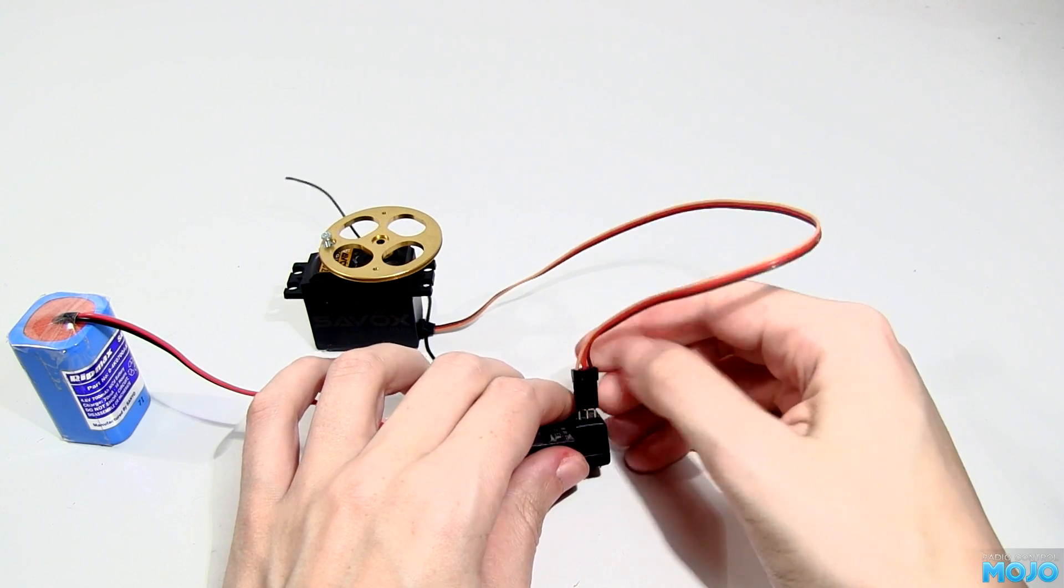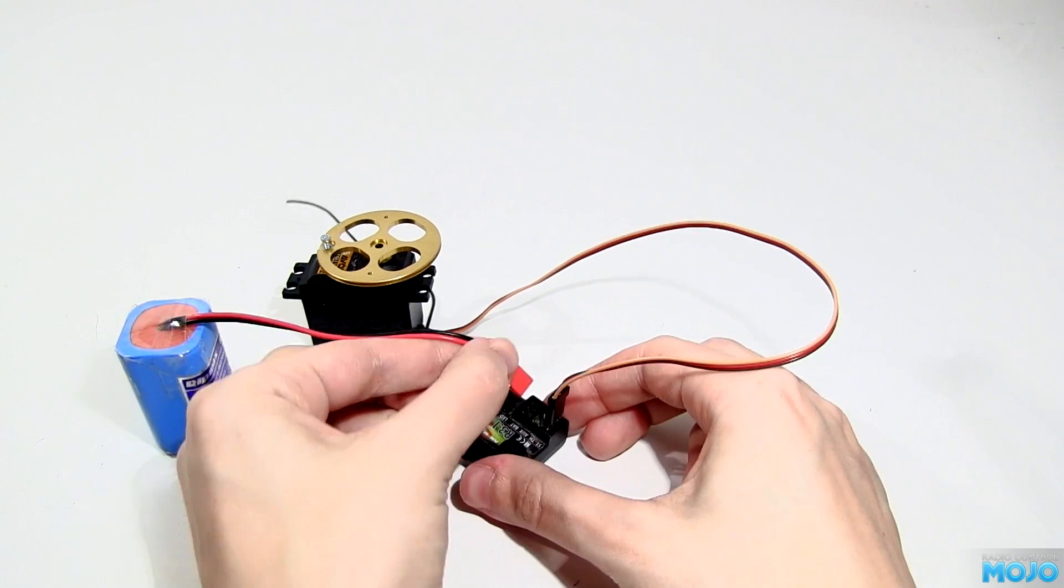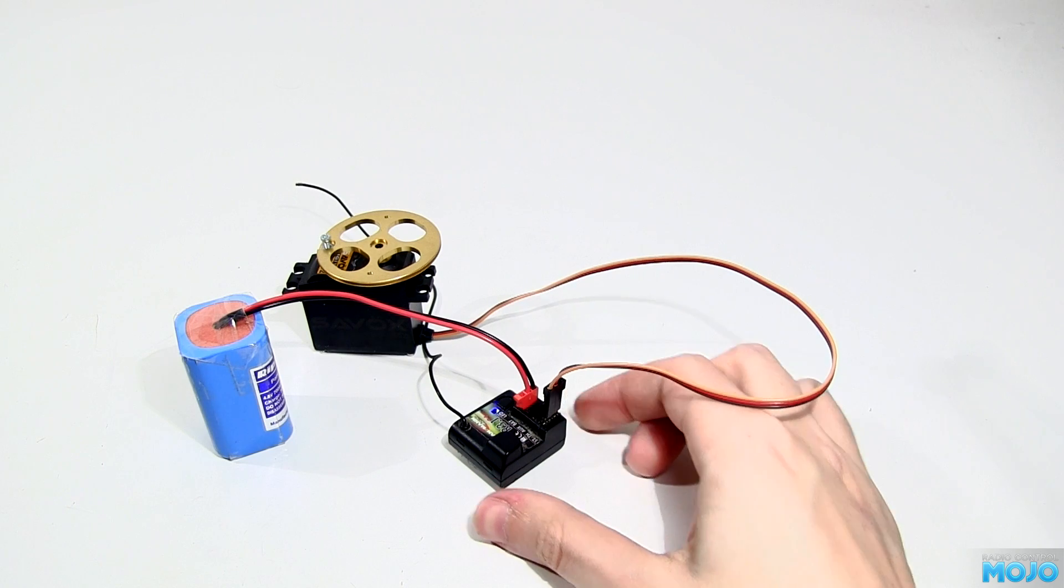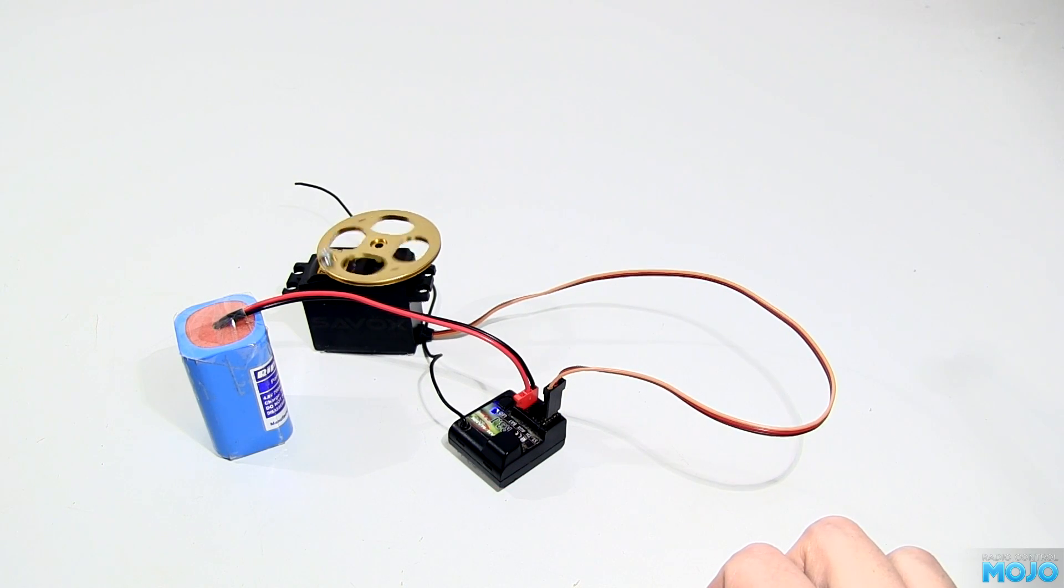OK, we've got an Ansmann W3.1 2.4GHz receiver, a Savox servo, and a 4-cell pack for power. As you can see, the servo is working nicely.